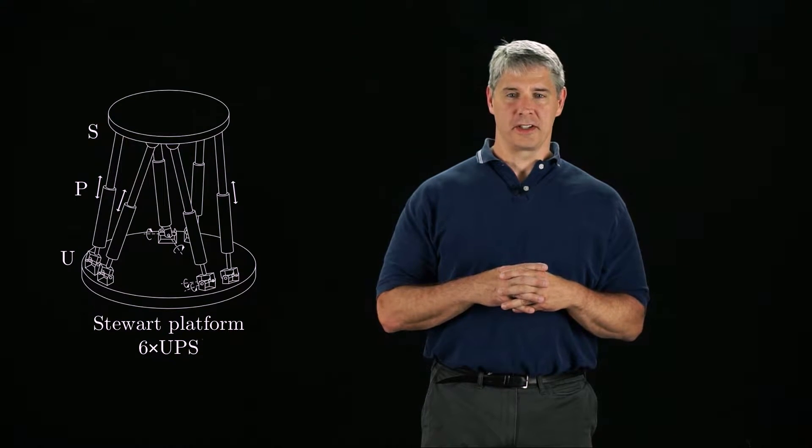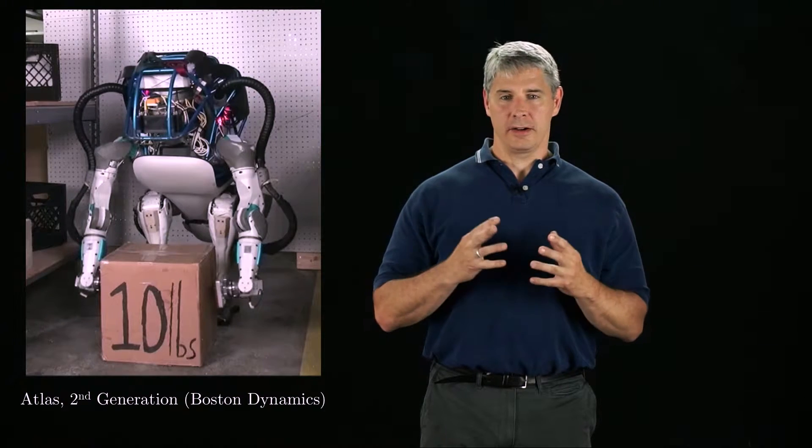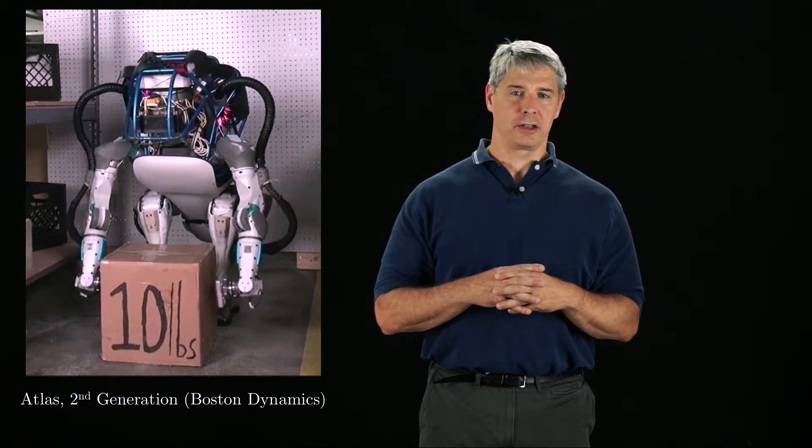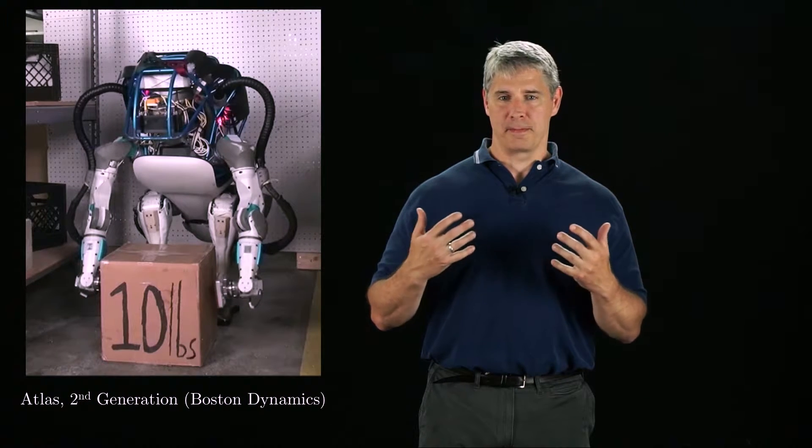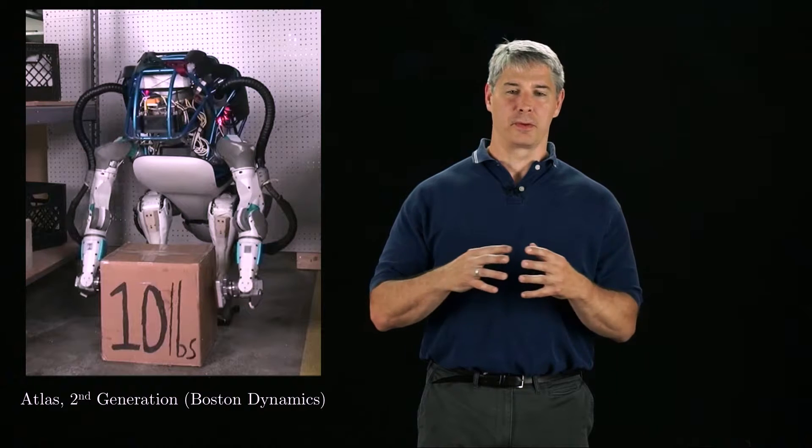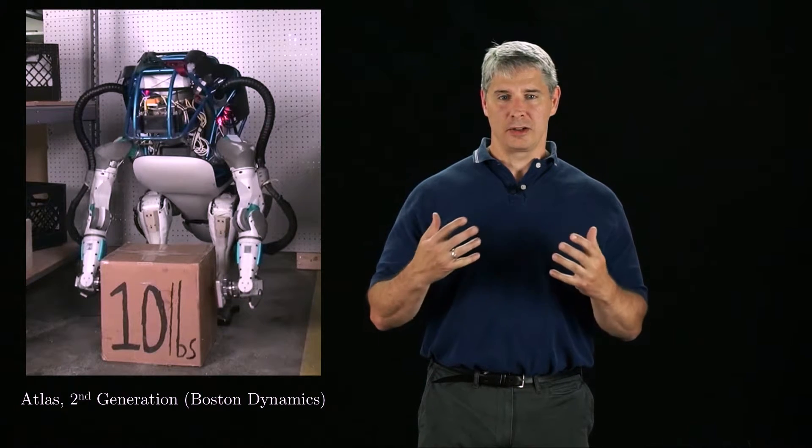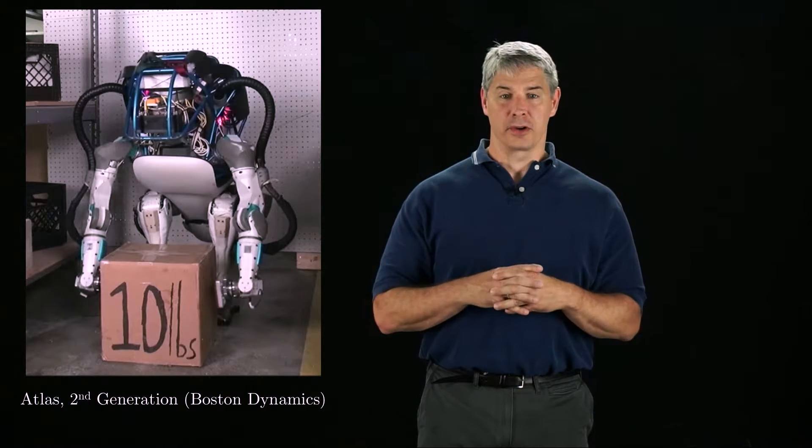Another example of a robot subject to constraints is a humanoid robot. Here, the feet in contact with the ground create a closed loop, and if the robot grips the box tightly, there is another closed loop through the arms. These closed loops have to be enforced by constraint forces.